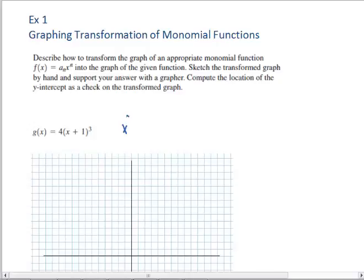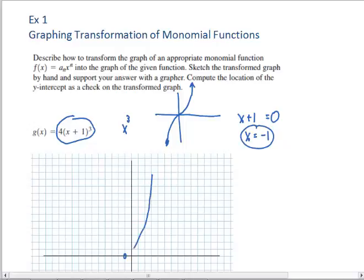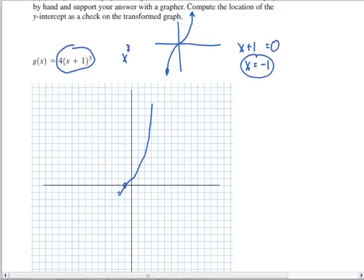We're going to consider what x³ looks like under normal circumstances, which would just be a simple cubic graph. This graph, because of this transformation, has been moved to the left by one. This is calculated by setting the binomial x + 1 equal to zero. When we solve it, we get x = -1. So we go to negative one and draw our transformed graph, plotting our coordinate where it intercepts the x-axis.